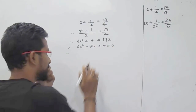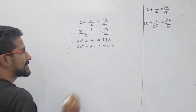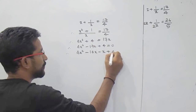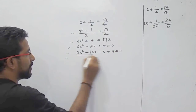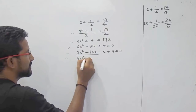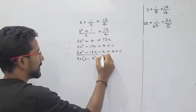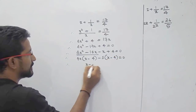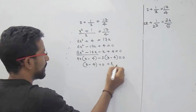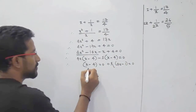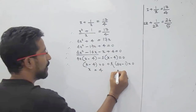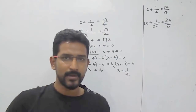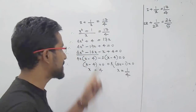So 4x squared minus 17x plus 4 equals 0. The product here is 4 into 4, that is 16, and the middle term is minus 17. So that will be minus 16x minus 1x. Taking common factors: 4x is common, giving x minus 4, and 1 is common, giving x minus 4 equals 0. So x minus 4 equals 0 or 4x minus 1 equals 0, giving x equals 4 or x equals 1 by 4. This is the normal method.